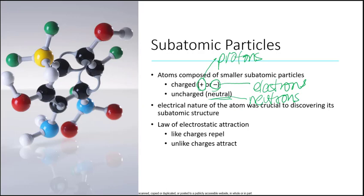The electrical nature of the atom was crucial to discovering its subatomic structure. There are laws of electrostatic attraction we need to know: like charges repel, and unlike charges attract — opposites attract. If I have two positively charged ions, they push away from each other. But a positively charged cation and a negatively charged anion will attract one another. Same with protons and electrons — the positively charged nucleus and the negatively charged electrons around it are attracted to one another. Two electrons push away from each other.